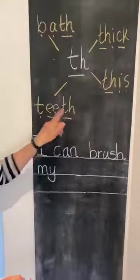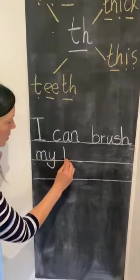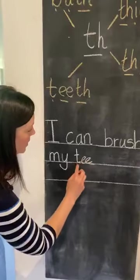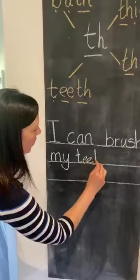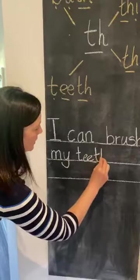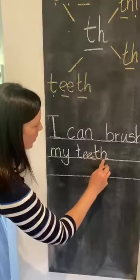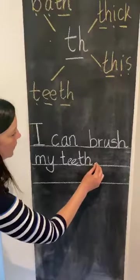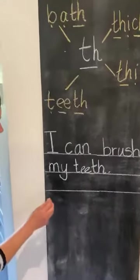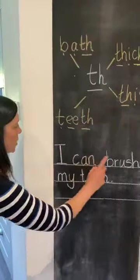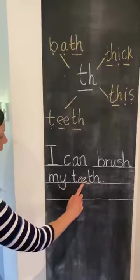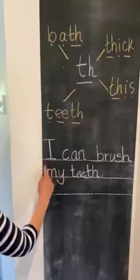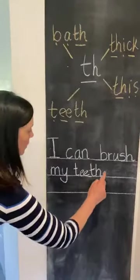And now we're going to do teeth. So t, e, th — you know that digraph — t, e, th. And this is our phonics sound today that we've been learning. Th is the quiet sound — t, e, th — teeth. And a full stop, because I've finished my sentence. I'm just going to check, did I get five words? One, two, three, four, five. I can brush my teeth. Full stop.